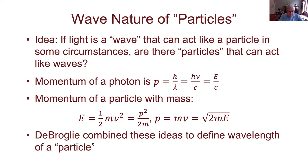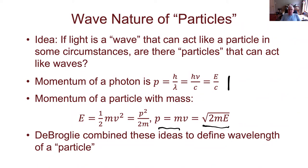We want to take the wave-particle idea further: if light started off being thought of as a wave and is shown to act like a particle, people start wondering — can particles act like waves too? Things we traditionally think of as particles? The answer is yes, especially for very small objects like electrons. The momentum of a particle with mass m has kinetic energy one-half mv², which equals p²/2m from classical physics, giving p = √(2mE).